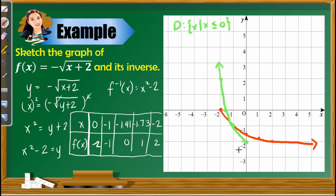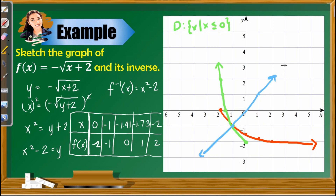To check if these two graphs are really symmetrical with respect to the identity function, let us draw y = x. Imagine flipping this Cartesian plane with respect to the diagonal line — will these two coincide? Yes, they are really symmetrical. For the range of the inverse, based on the domain of f(x), we get {y | y ≥ −2}. This is confirmed on our graph: starting from −2, the graph goes upward continuously.